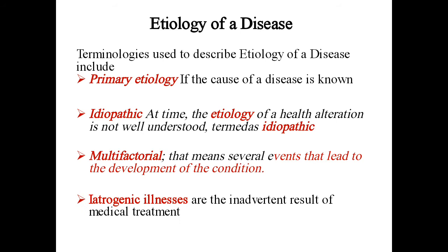Terminology used to describe etiology includes: Primary etiology — if the cause of a disease is known; Idiopathic — when the etiology of a health alteration is not well understood; Multi-factorial — when several events lead to the development of a condition; and Iatrogenic — illnesses that are the inadvertent result of medical treatment.